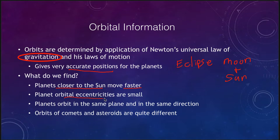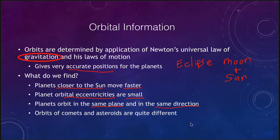Orbital eccentricities tell you how squashed the orbits are — they are small for the planets, meaning planets have almost circular orbits. That is why circular orbits were used for thousands of years; there was no obvious difference. We also find that the planets orbit in the same plane, meaning a flat diagram of the solar system is a reasonable approximation of reality. Additionally, all planets orbit in the same direction — not some clockwise and some counterclockwise.